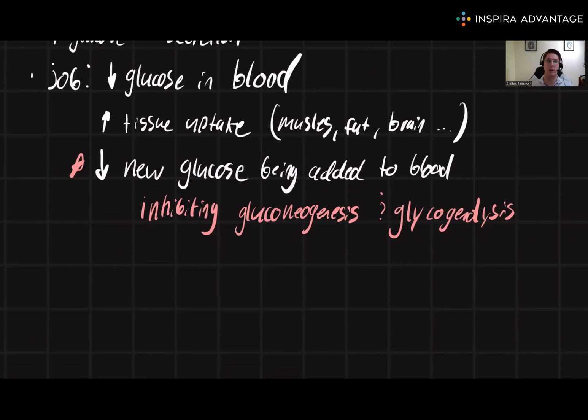Glycogenolysis means breaking down glycogen. Glycogen is basically stored glucose. Again, we don't want to add more glucose into the blood—we're trying to get rid of it. So it makes sense that insulin is going to inhibit these processes that would increase the amount of glucose in the blood.